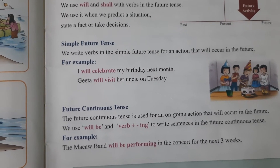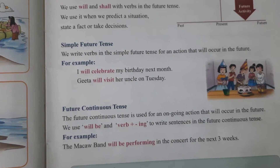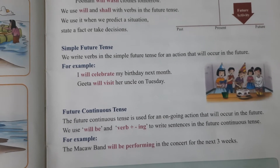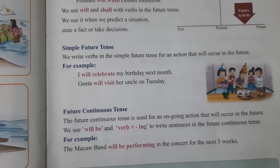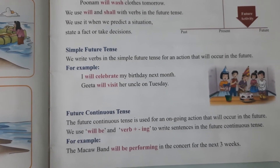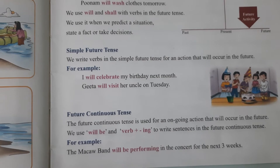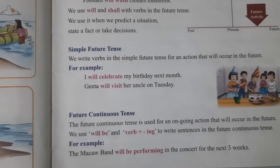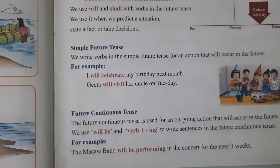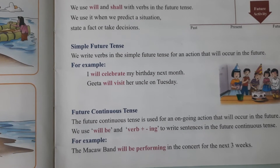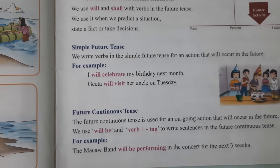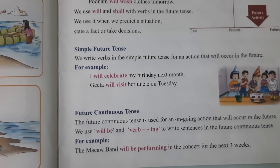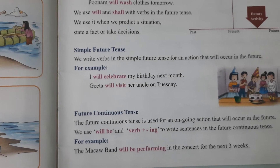We write verbs in the simple future tense for any action that will occur in the future. For example: I will celebrate my birthday next month — that is a future tense sentence.